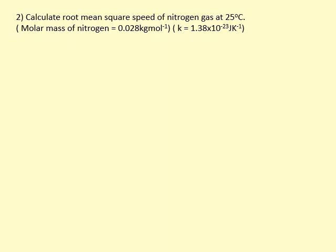Calculate the root mean square speed of nitrogen gas at 25 degrees Celsius. The molar mass of nitrogen is given, which is the mass of one mole. Firstly, the kinetic energy, because we've been given the temperature, so it's 3 over 2.